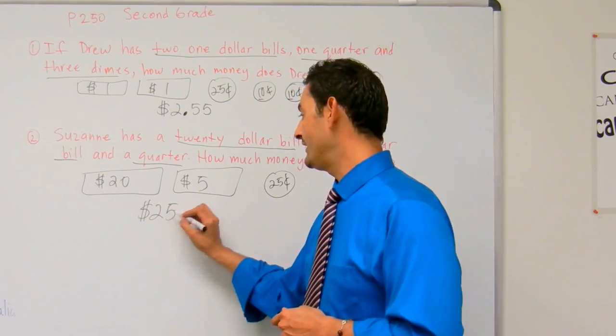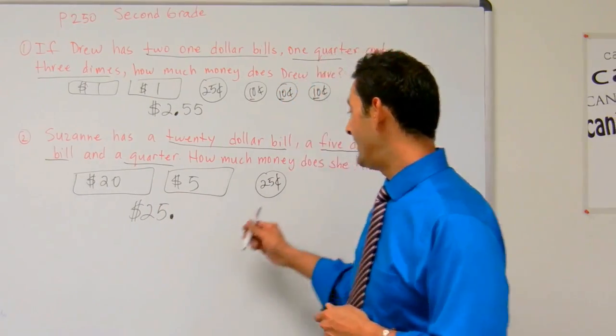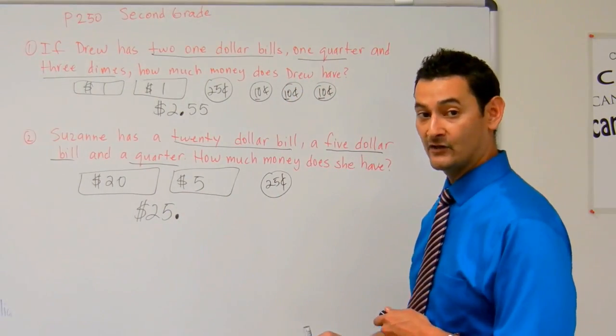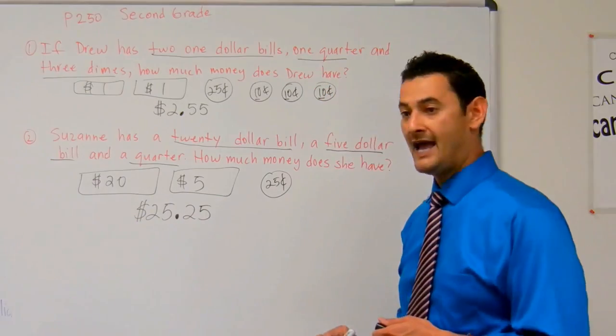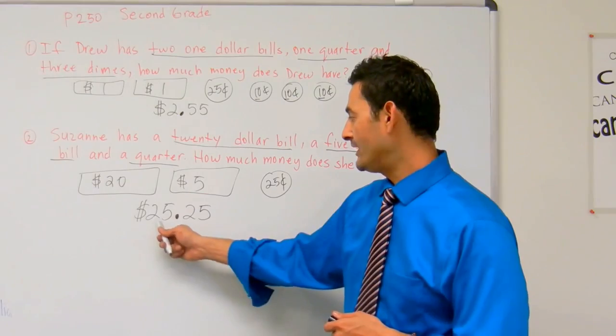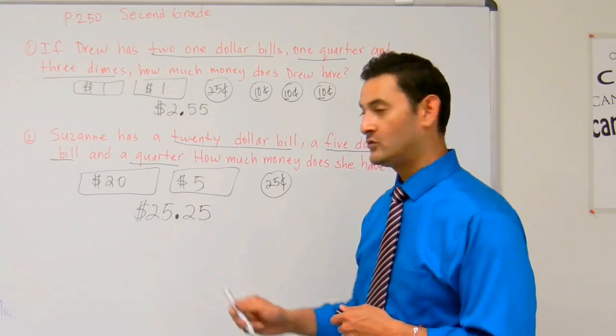So she's got twenty-five dollars, and how many cents does she have? She's got a quarter, she's got twenty-five cents. So that's what she has. So Suzanne has twenty-five dollars and twenty-five cents.